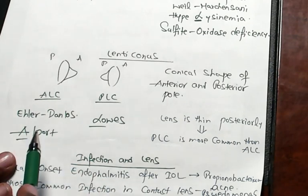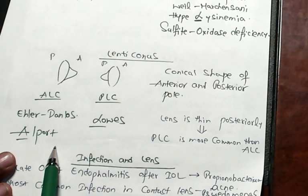Anterior lenticonus occurs in Ehlers-Danlos and Alport syndrome. In Alport syndrome you also have deafness and glomerular involvement.